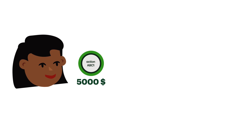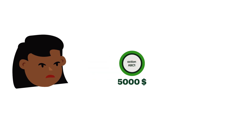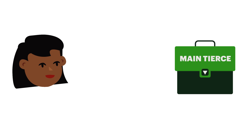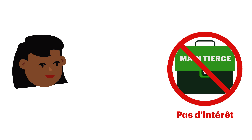If you short five thousand dollars of stock, the five thousand dollars doesn't immediately become yours. In fact, the five thousand dollars acts as collateral against the shares that you borrowed, and it's held in escrow until you close your short position.